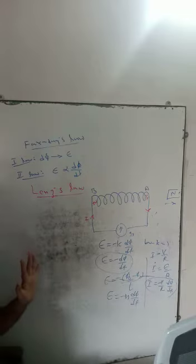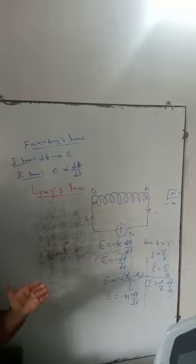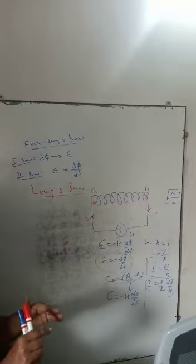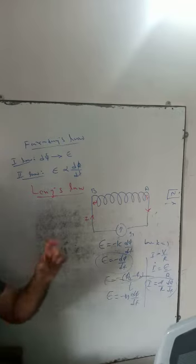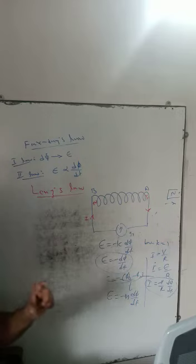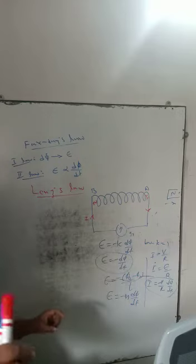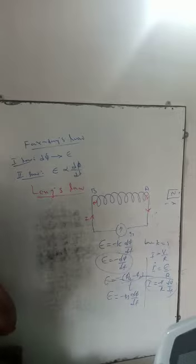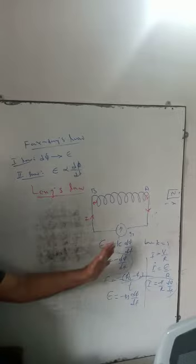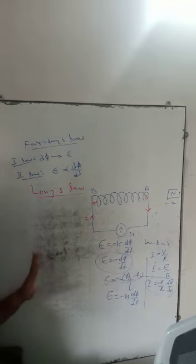The polarities of the induced EMF depend on the change in magnetic flux. If magnetic flux increases, the induced EMF is positive; if magnetic flux decreases, the induced EMF is negative. The change of magnetic flux is responsible for the production of the induced EMF.